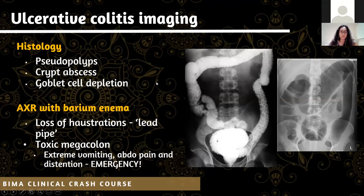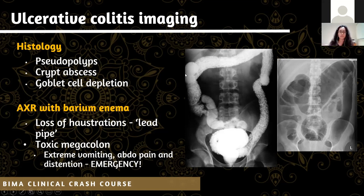For ulcerative colitis on imaging: the key findings are pseudopolyps, crypt abscesses, and goblet cell depletion. On X-ray, there's a loss of haustrations giving a lead pipe appearance - rather than seeing different sections, it looks like one long pipe. A major complication of UC is toxic megacolon, which is an emergency. You see massive colonic distension on imaging, which can be due to infection from C. difficile. Symptoms include extreme vomiting, abdominal pain, and distension.